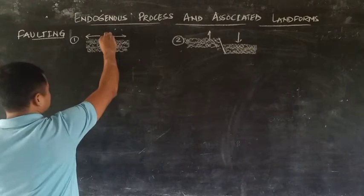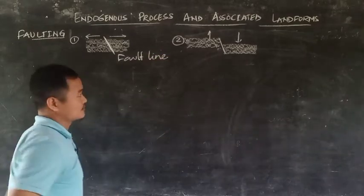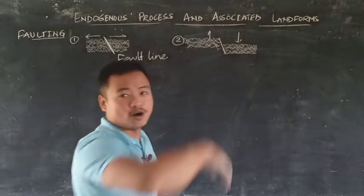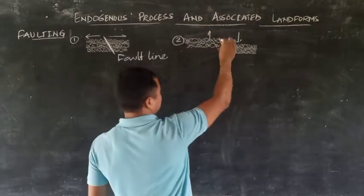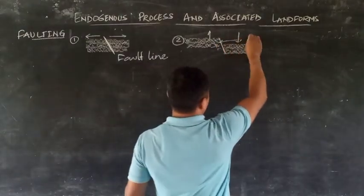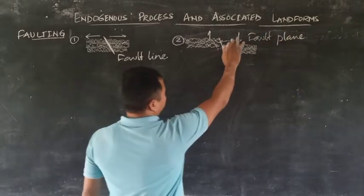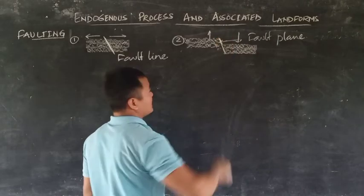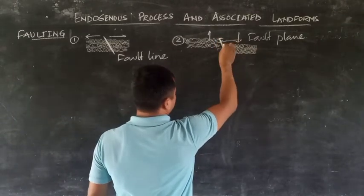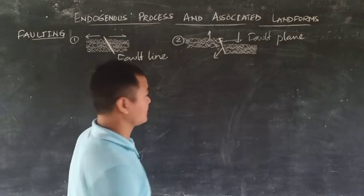The line where the fault occurs is known as the fault line. Along this fault line, landforms either uplift or slip down (subside). The plane structure where the landform is slipping is known as the fault plane. The steep-sided slope of the fault plane or fault line is known as the fault scarp.